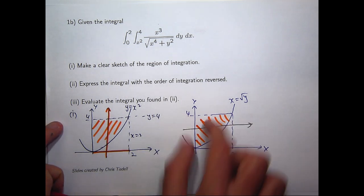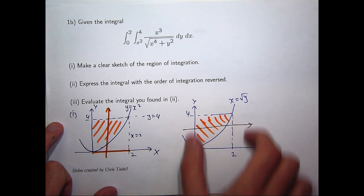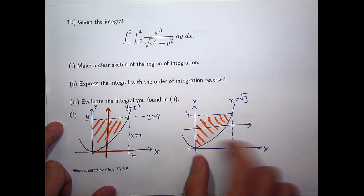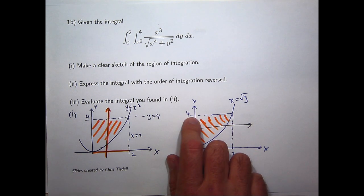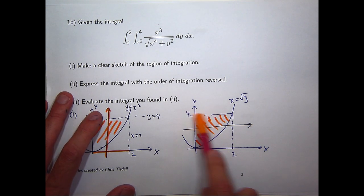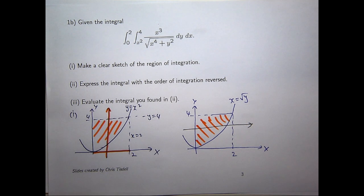Now to sort of cover the entire shaded region, I need to move this line up and down the y-axis from 0 to positive 4. So there are my bounds, y equals 0, y equals 4, x equals 0, x equals root y. So let's write that as an integral.